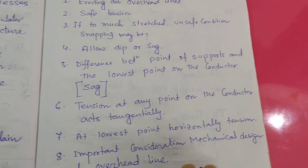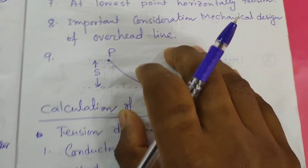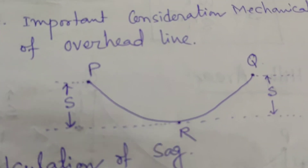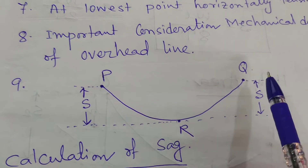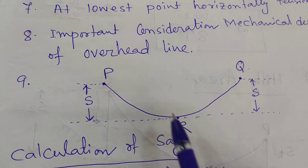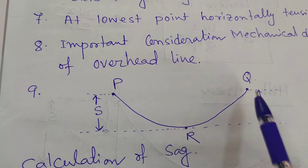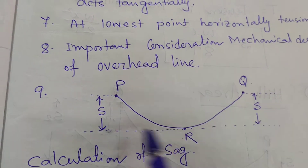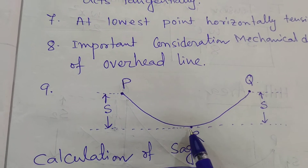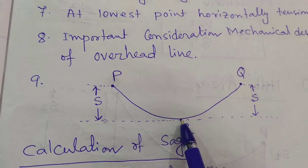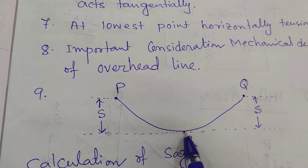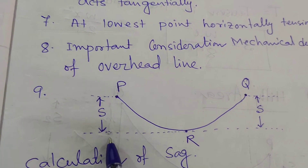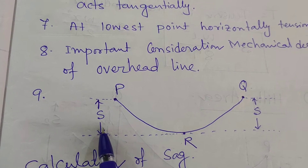These points are very important to memorize. Here in the picture, I am trying to show you two points: P and Q, and a third point R. P and Q are connected with the transmission tower as the support points, and R is the lowest point — the SAG point. So the difference between the lowest point of the conductor and the support point is called the SAG, and it is denoted by S.